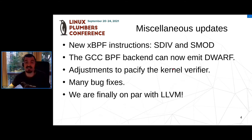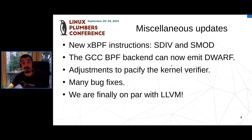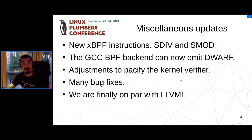We changed the GCC BPF backend so it can now emit DWARF debug info. The main debug information format for BPF is BTF, but nothing prevents us from generating DWARF as well. The DWARF that GCC generates for BPF is not terribly useful in some senses because this target is very particular — there are things we cannot express, like call frame information. But at least you can generate DWARF for your BPF programs.